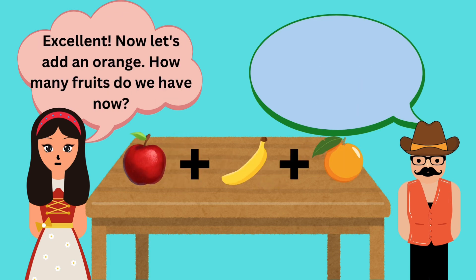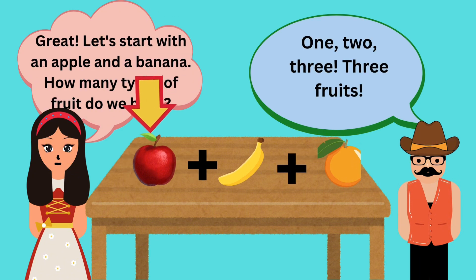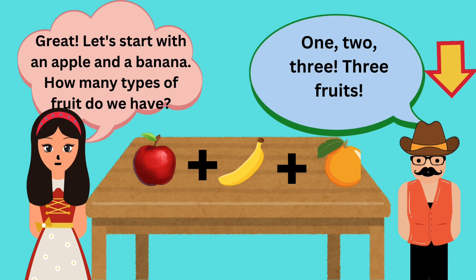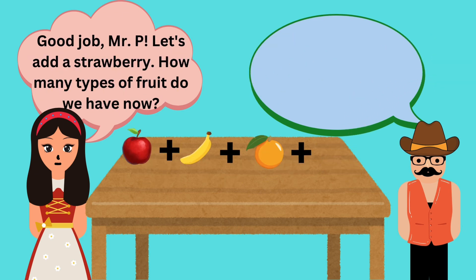Excellent. Now let's add an orange. How many fruits do we have now? One, two, three. Three fruits. Good job, Mr. P.